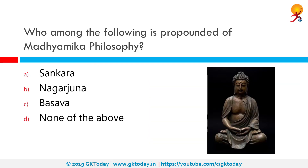Who among the following is the propounder of Madhyamika philosophy? The correct answer is Nagarjuna. Madhyamika, Buddhist philosophy and Yogachara are the two main philosophical trajectories associated with the Mahayana stream of Buddhist thought. According to Tibetan doxographical literature, the definitive expression of Buddhist doctrine is mentioned in this.